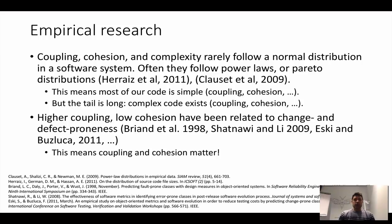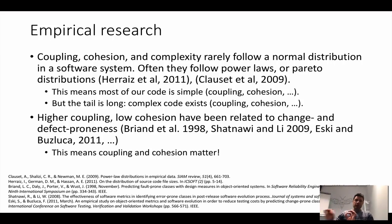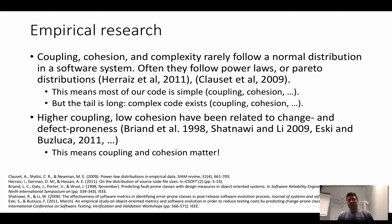Empirical research shows that coupling, cohesion, and complexity do occur in our systems. We do have highly coupled classes, but it follows a power law distribution — most of our code is simple and less coupled, but we do have coupled parts that need attention. Research shows that higher-coupled or low-cohesive modules are more related to change and defect proneness — developers have to change them more often and they have more bugs.